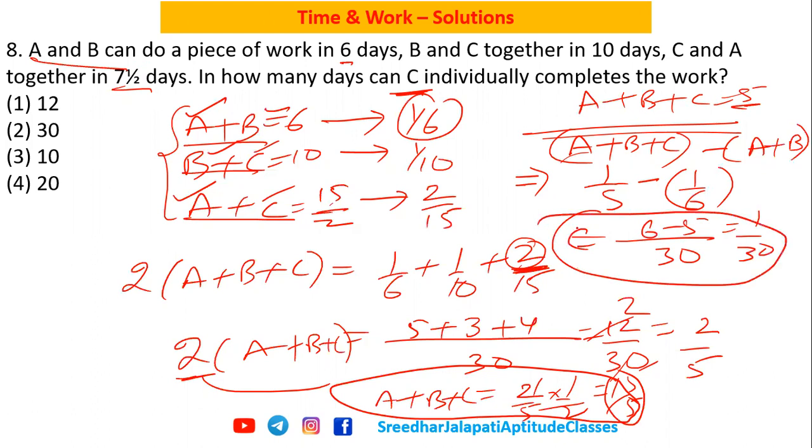C takes 30 days to finish because C's one day work is 1/30. Therefore, C takes 30 days to finish the work working alone.